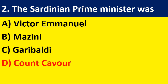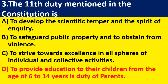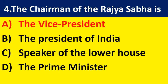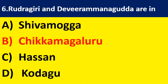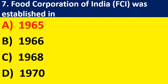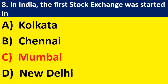Question 2: the Sardinian Prime Minister was — answer: Count Cavour. Question 3: the 11th duty mentioned in the Constitution is — answer: to provide education to their children from the age of 6 to 14 years is the duty of parents. Question 4: the chairman of the Rajya Sabha is the vice president. Question 5: the best example for a matriarchal family is Nayars of Kerala. Question 6: Rudragiri and Devi Ramana Gudda are in Chikkamagaluru district. Question 7: the Food Corporation of India was established in 1965. Question 8: in India, the first stock exchange was started in Mumbai.